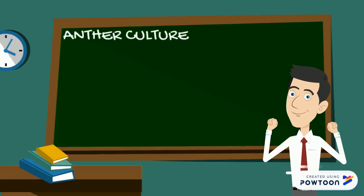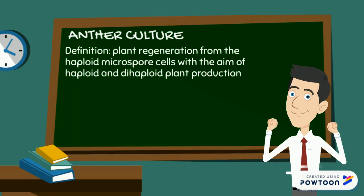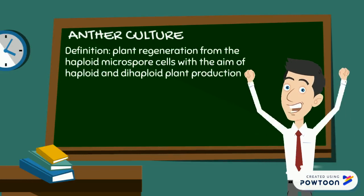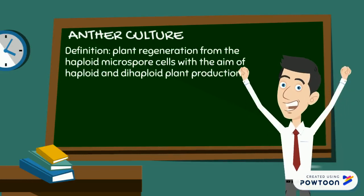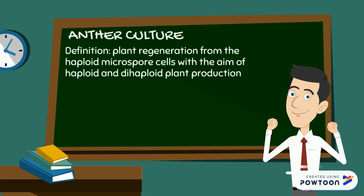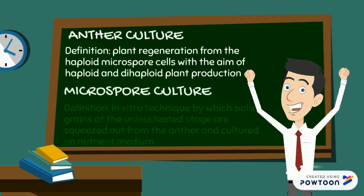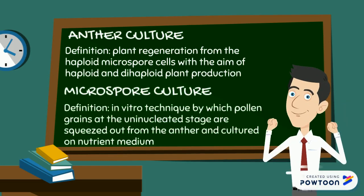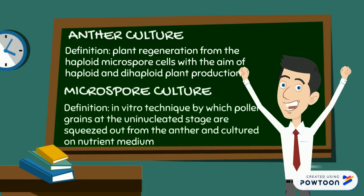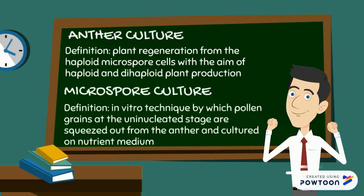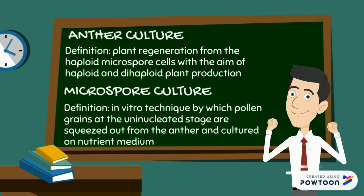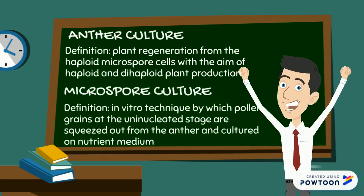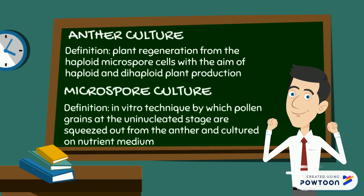Anther culture is plant regeneration from the haploid microspore cells with the aim of haploid and dihaploid plant production. Microspore culture is an in vitro technique by which pollen grains at the uni-nucleated stage are squeezed out from the anther and cultured on nutrient medium.